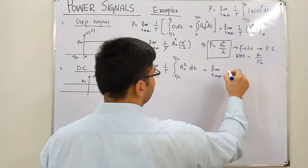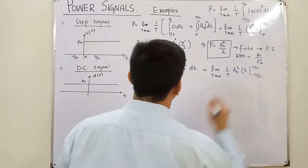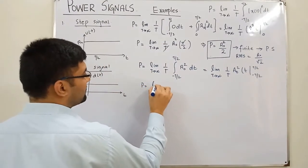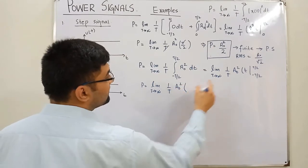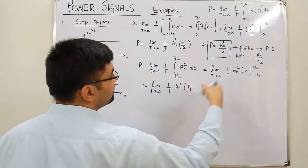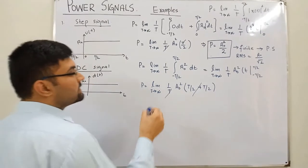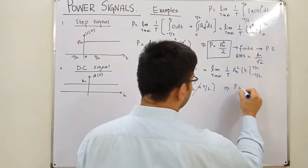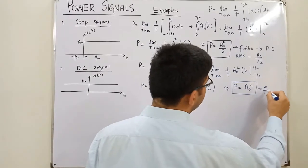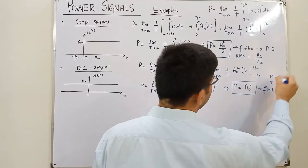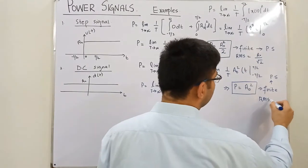So the power equals limit T approaching infinity of (1/T) times a₀² times [T/2 − (−T/2)] = a₀² × T. The T cancels with the 1/T, so the power of the DC signal is a₀². Since a₀² is a finite value, this is a power signal, and its RMS value is a₀.